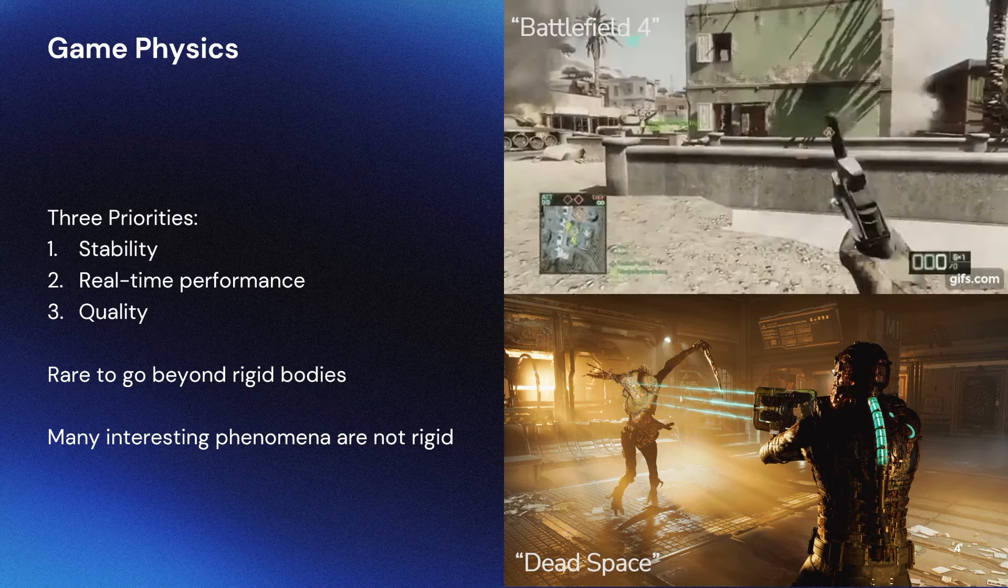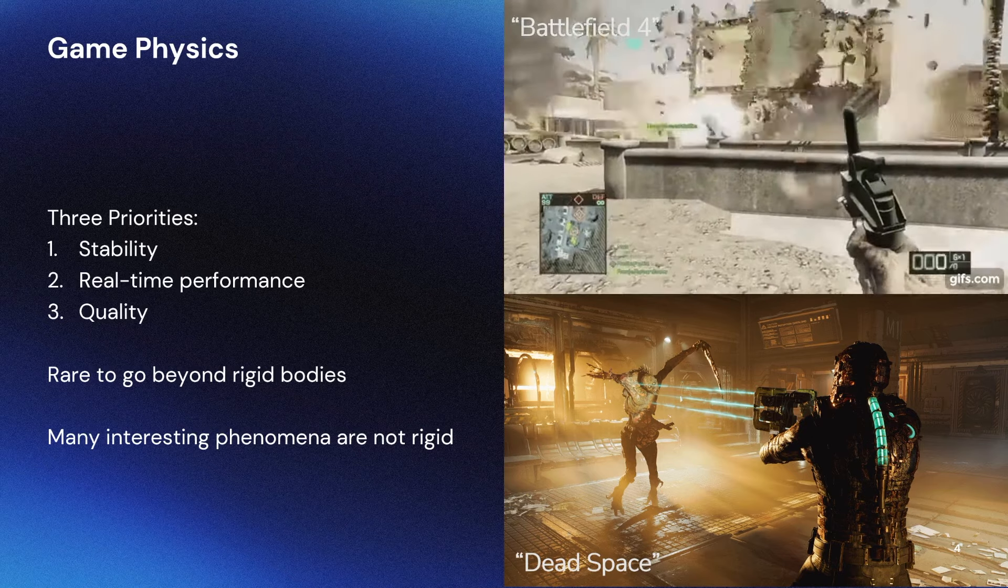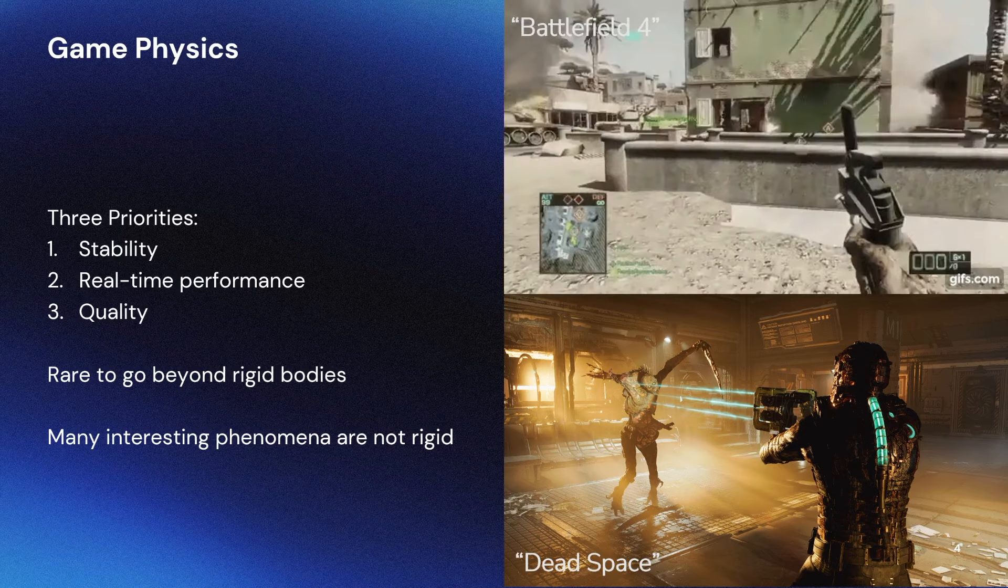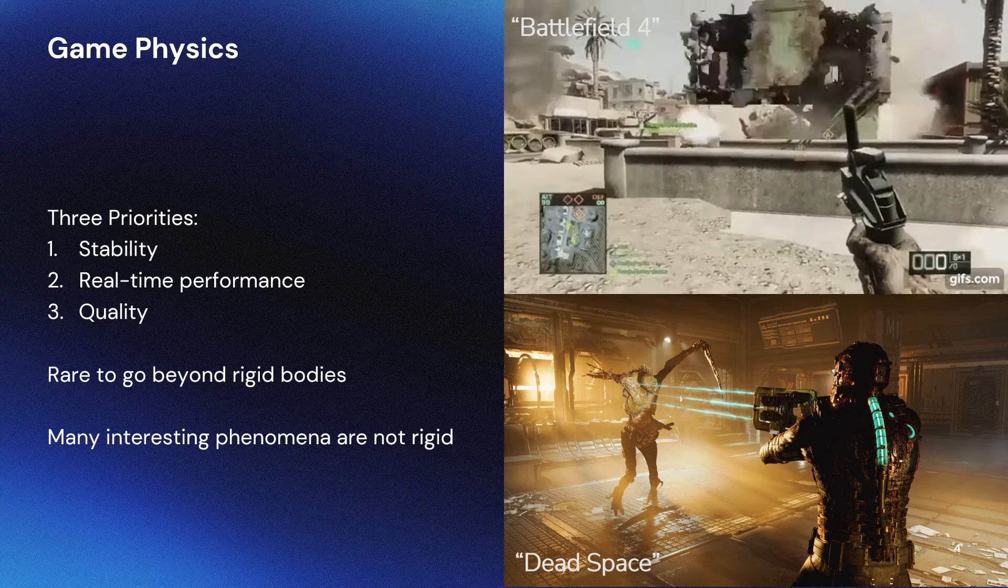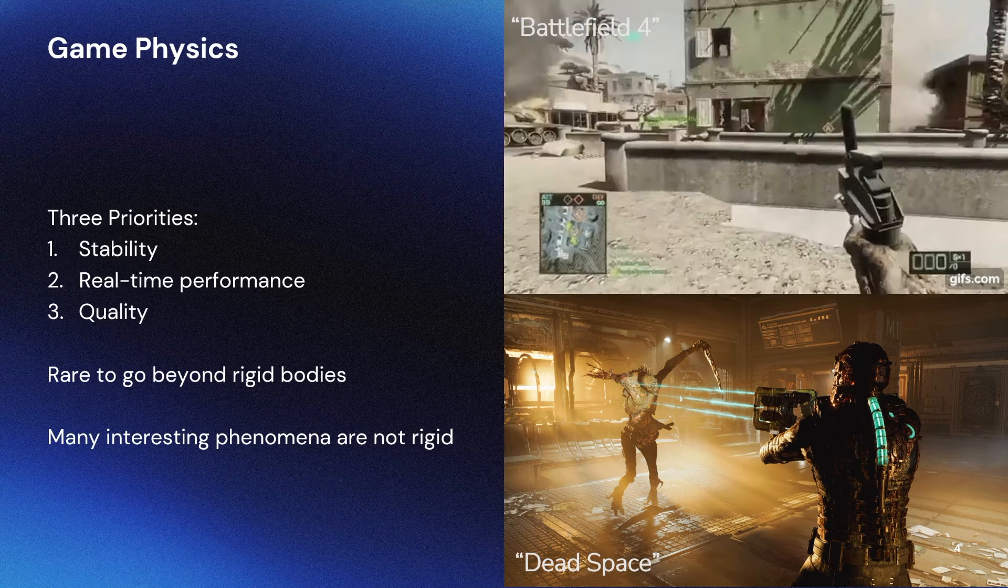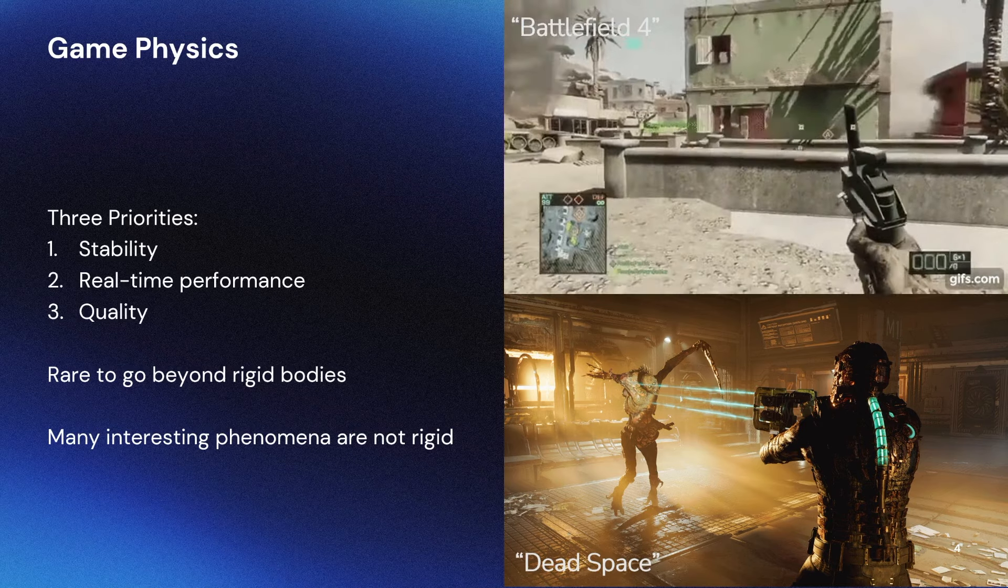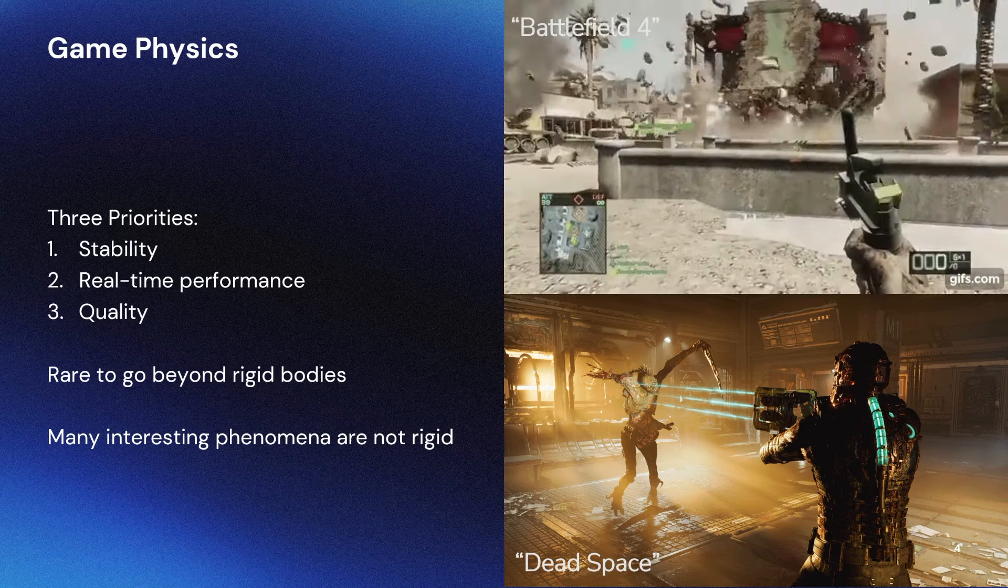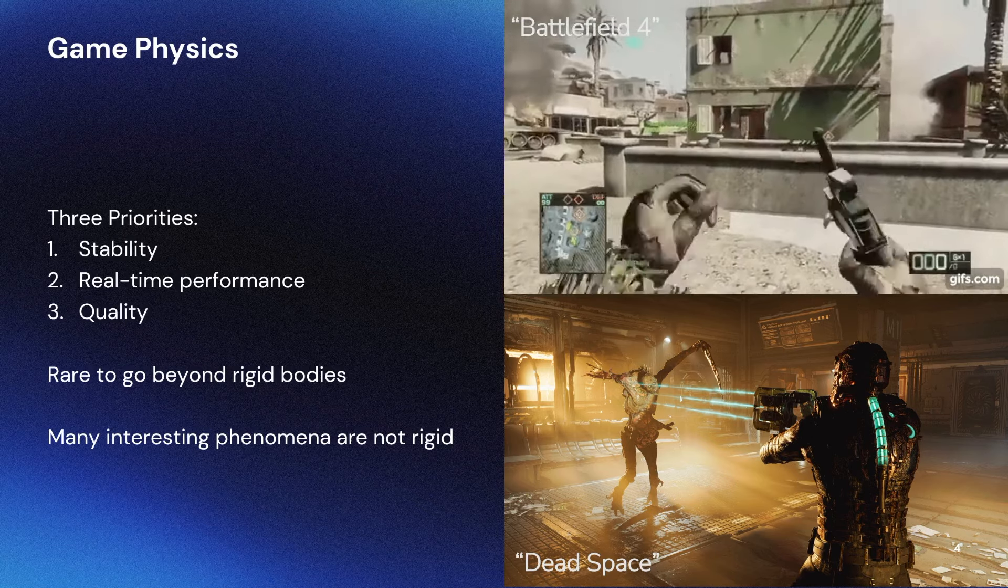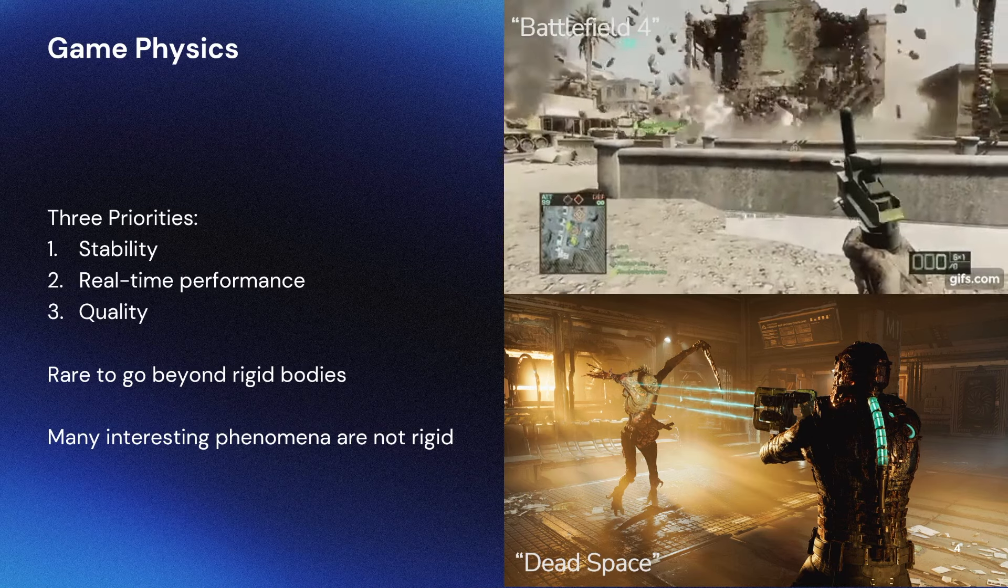Before going into the specifics of these techniques, I want to talk a bit about the priorities we have in game physics simulation. It's well known that game physics simulations have to execute extremely quickly, but the most problematic requirement is actually stability. Game physics simulations have to happen completely autonomously, and usually the player has some kind of input into the simulation as well, which can potentially be very violent. This severely constrains the methods that we can use.